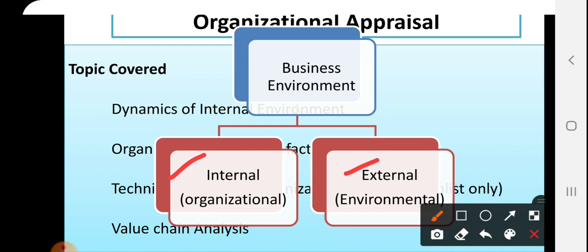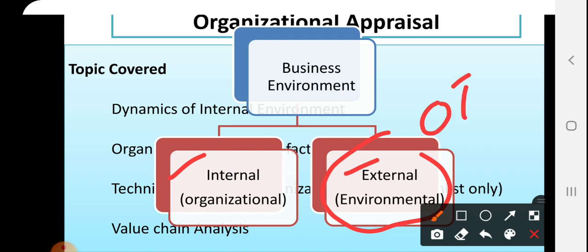External means those things which are not in the hands of companies — those are out-of-controllable things — which give some opportunities and threats for the companies. This external environment is further divided into two categories: micro and macro. Micro means those factors which affect your business directly, and macro are those which affect your business indirectly.